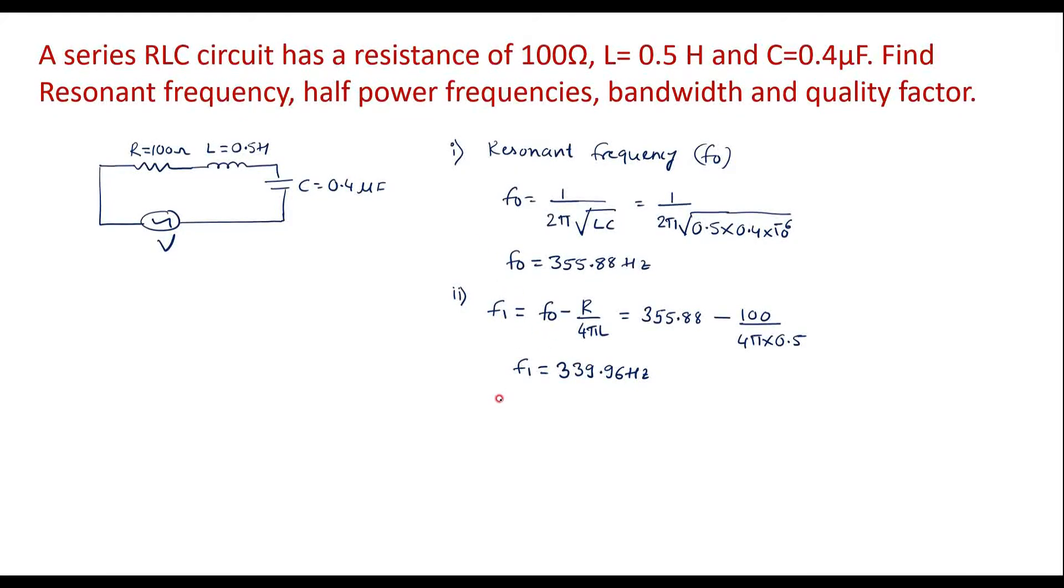Now let us calculate upper cutoff frequency that is F2 which is equal to F0 plus R by 4 pi into L. Simplifying this, F0 is 355.88 plus 100 divided by 4 pi into 0.5. F2 is equal to 371.79 Hertz.